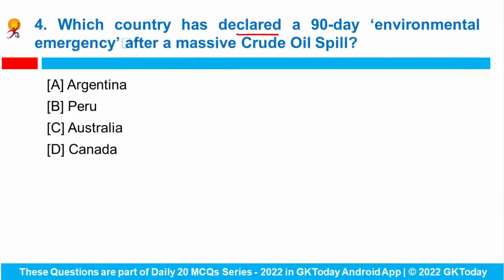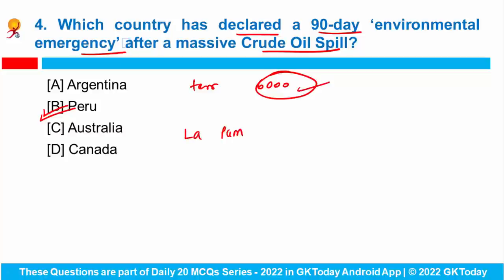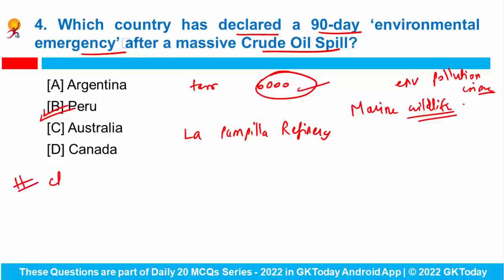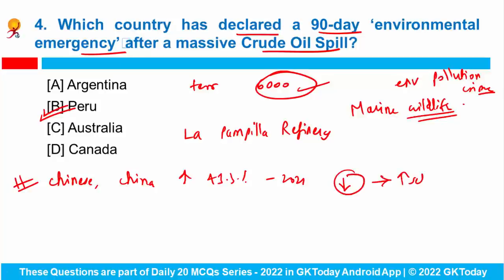Question number four: the government of Peru has declared a 90-day environmental emergency in damaged coastal territories after 6,000 barrels of crude oil spilled into the sea. This incident occurred at the La Pampilla refinery. The spill caused the death of marine wildlife and is being investigated as an environmental pollution crime. Additionally, as per Chinese government data, India's bilateral trade with China has increased by 43.3% in 2021, despite India's measures to decrease dependence on Chinese imports and emphasis on self-reliance. India's imports from China increased to 97.5 billion dollars in 2021.